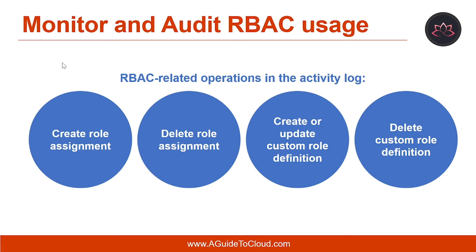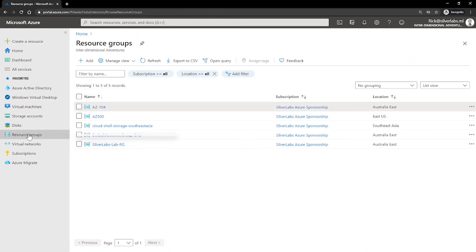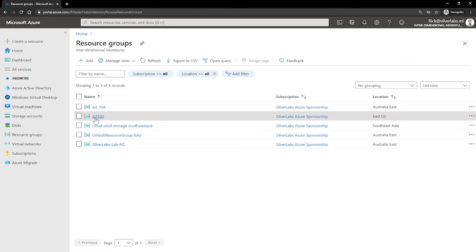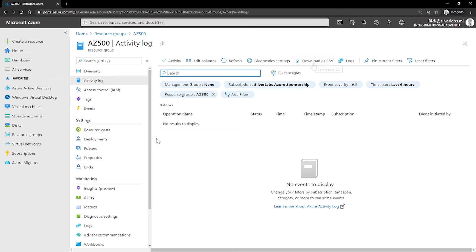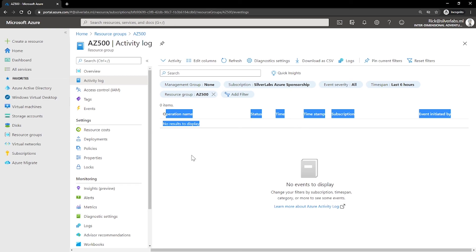Let's talk about how to monitor and audit RBAC usage. Sometimes you need information about role-based access control changes, such as for auditing or troubleshooting purposes. Anytime someone makes a change to role assignments or role definitions within your subscription, the changes get logged in the Azure Activity Log. You can view the activity logs to see all RBAC changes for the past 90 days. Within a resource group, you can click on Activity Log — this includes a link to download the logs as a CSV. The RBAC-related filters include event category and operation.